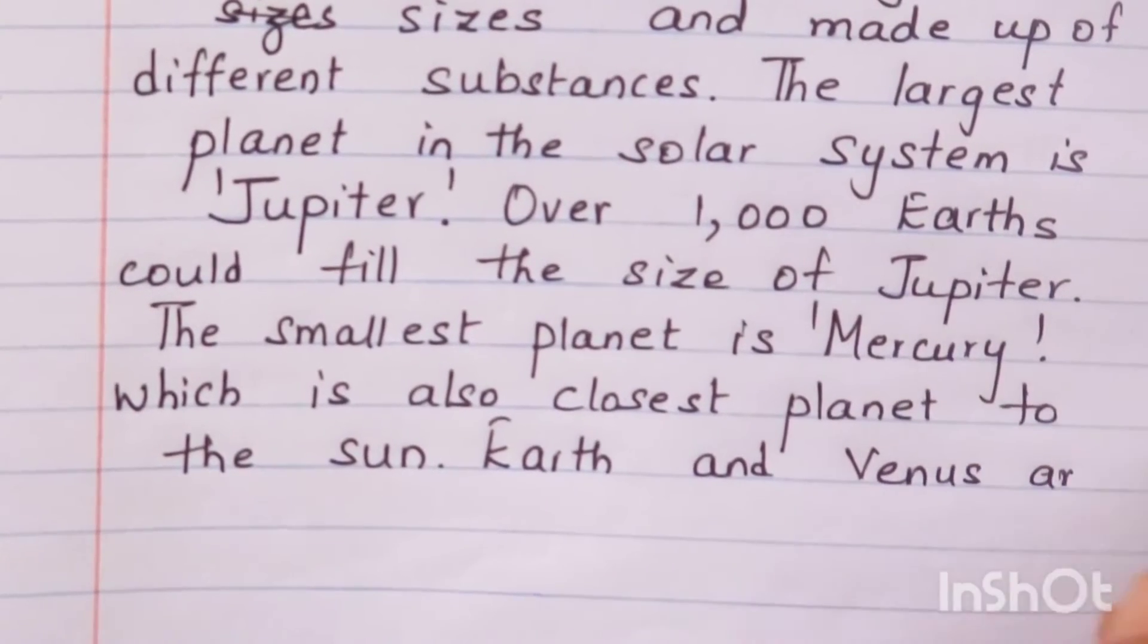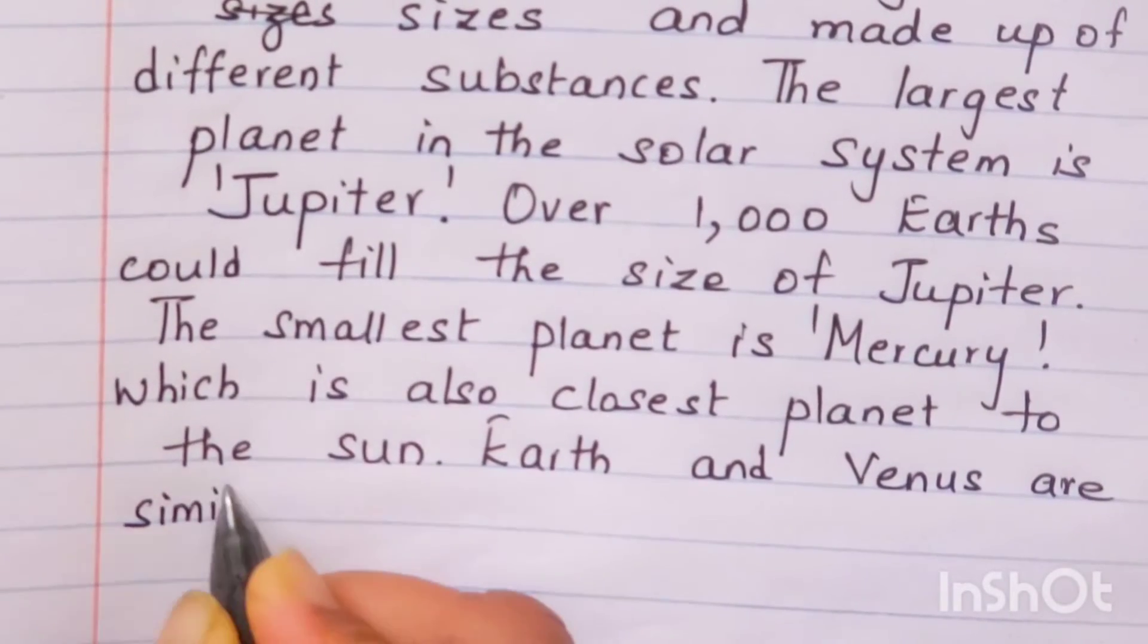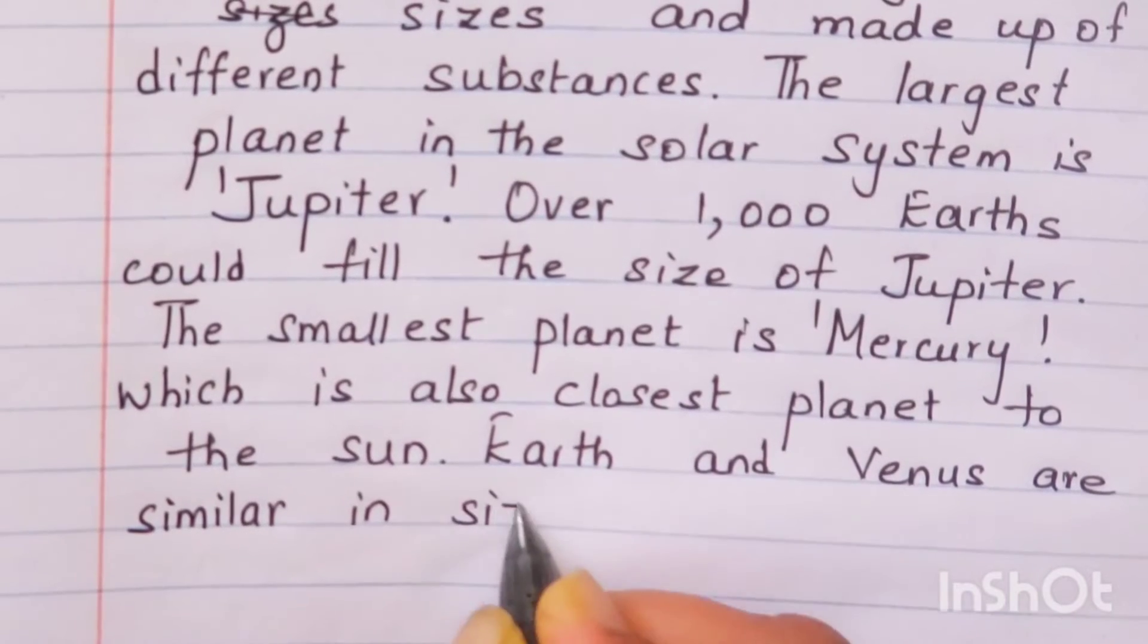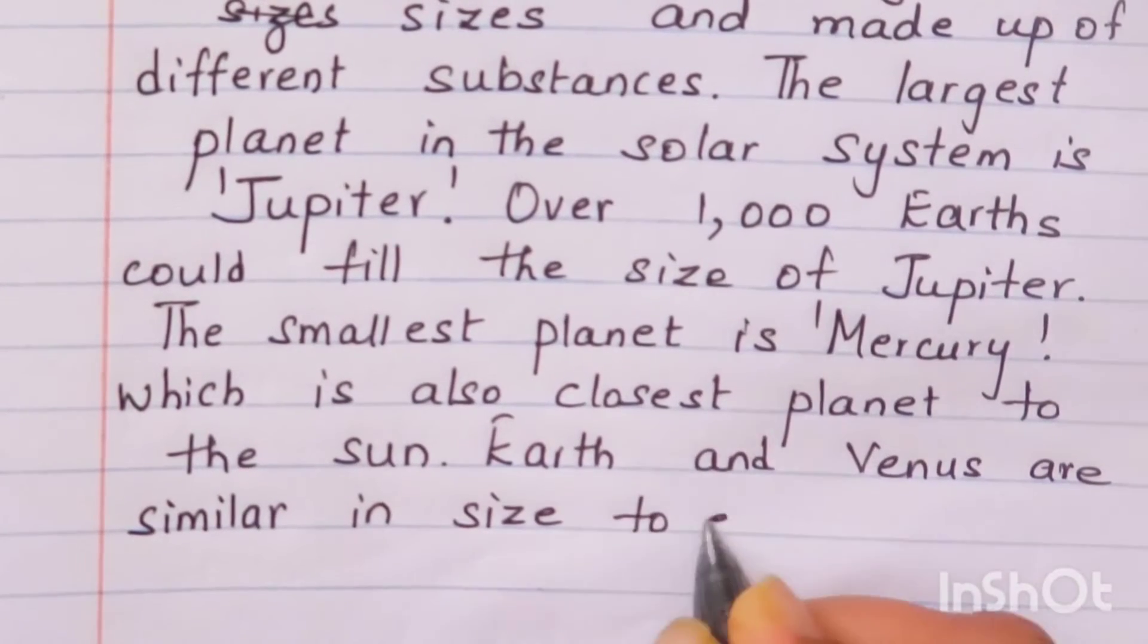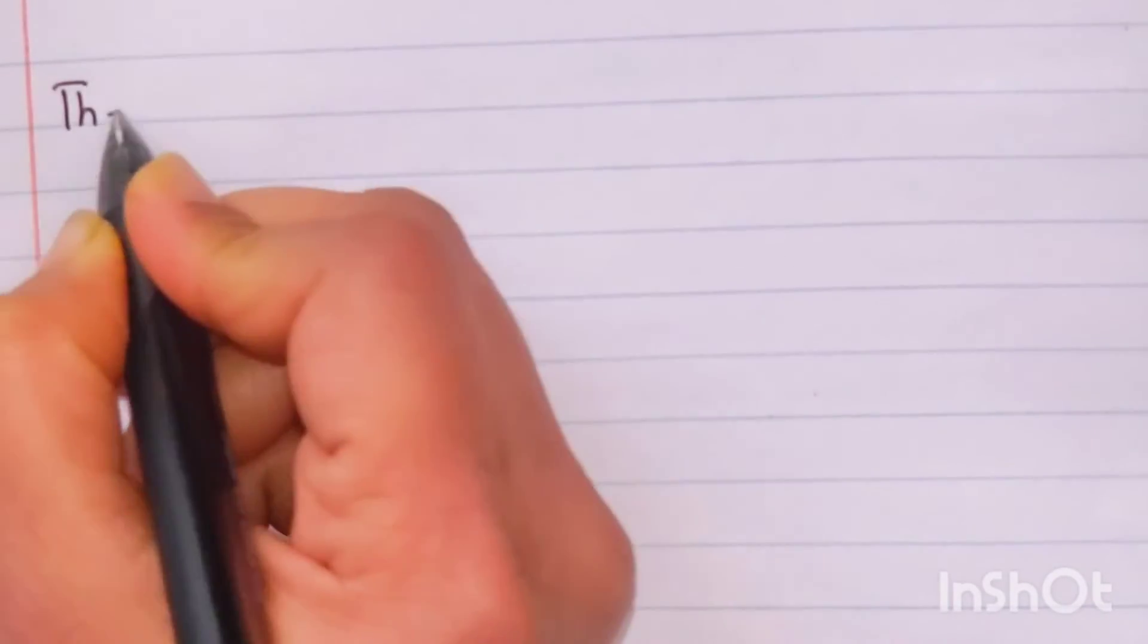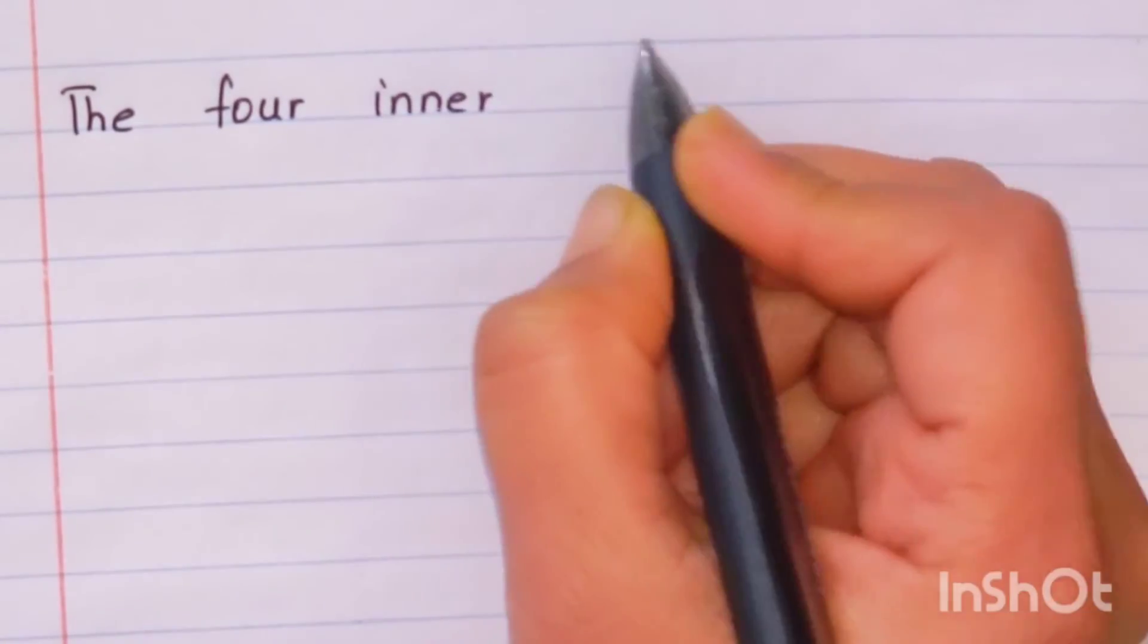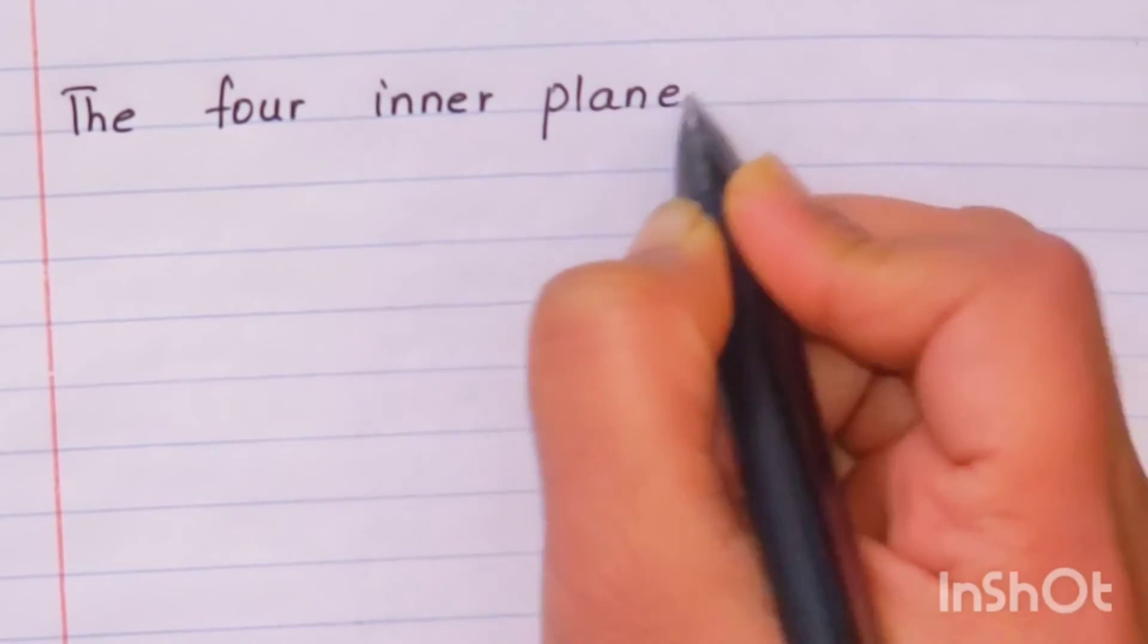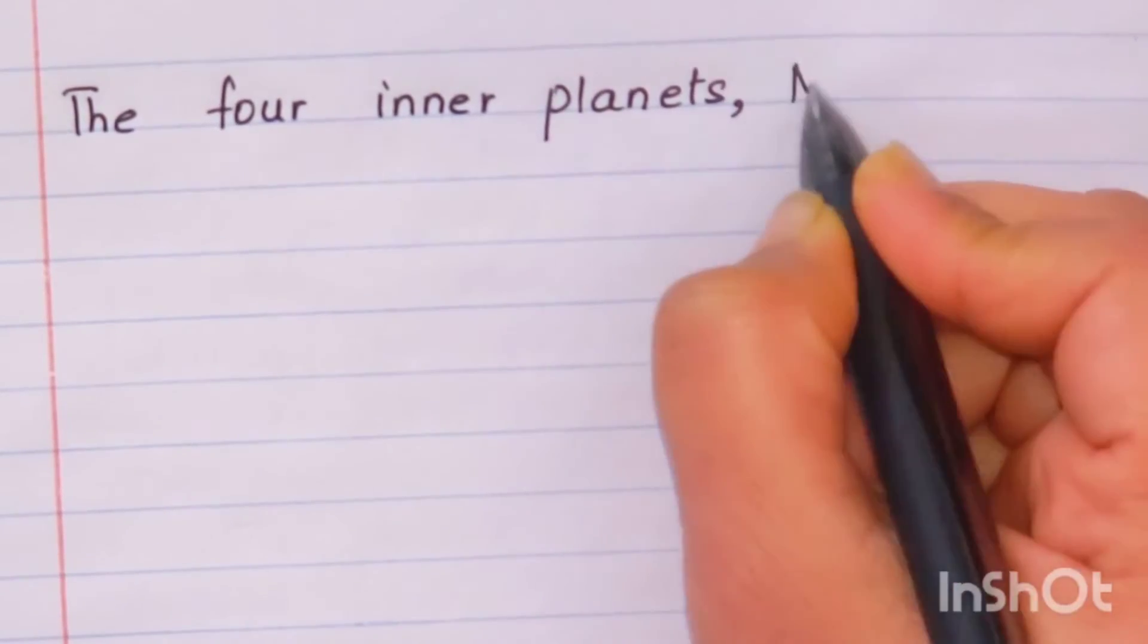Earth and Venus are similar in size to each other. But leaving Venus and earth all are of different size.